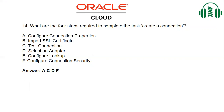Test the connection is also true — we need to test the connection once everything is set up. Option D — select adapter — yes, we need to select an adapter before configuring anything. Configure lookup is not required. Configure connection security is also true — we need to provide username and password. The steps in order are: select adapter, configure connection properties, configure connection security, and finally test the connection. A, C, D, F is correct.